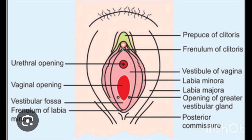This is the picture of the external genital organ of the female reproductive system. The whole area is called the vulva. The vulva consists of external organs such as labia majora, labia minora, clitoris, vestibule, urethral opening, vaginal opening, and hymen.